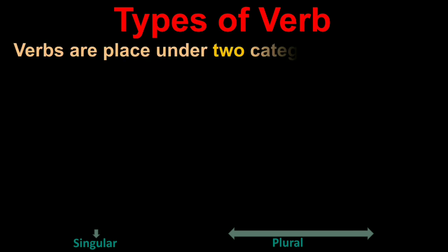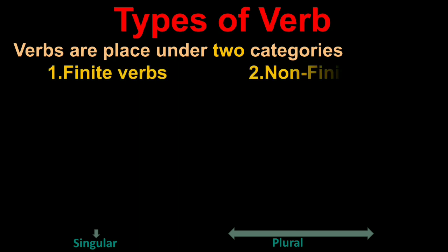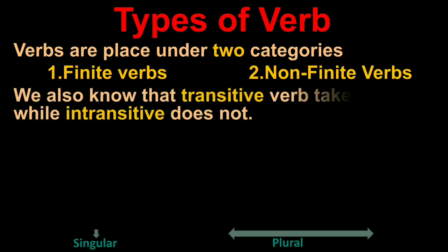There are two types of verbs mainly. Verbs are placed under two categories. First is finite verbs and second is non-finite verbs. We also know that transitive verb takes object while intransitive doesn't.